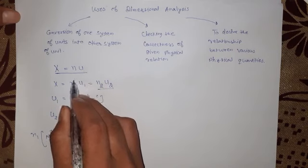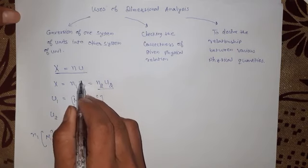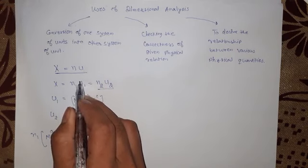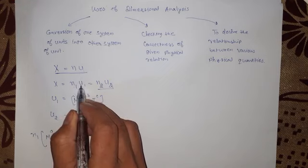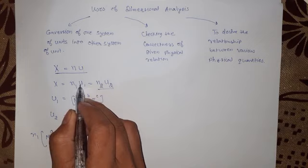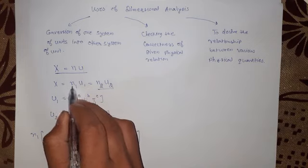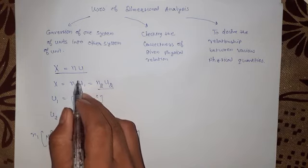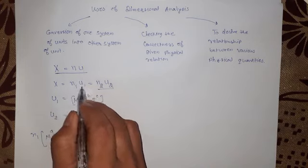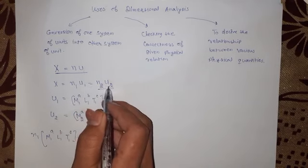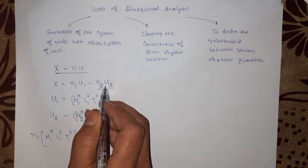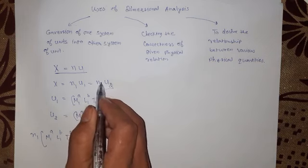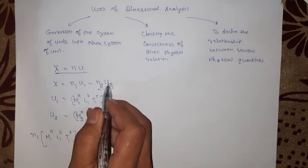Just suppose we are in the CGS system — a smaller system of unit. When we have a smaller unit, the number is larger. And when we are going to convert it into the SI system or any other system of unit, the number will be different and the unit will be different.